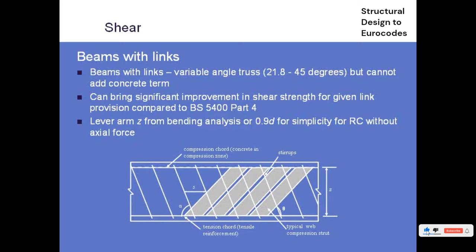Without any links, that's the situation. If we have links, then we have the same sort of truss model that was hidden behind BS5400. Whereas BS5400 had a truss model with inclined compression struts fixed at 45 degrees - it didn't tell you that in the code but that was the background - in the Eurocode we can vary the angle of those struts from 45 degrees down to a much flatter angle of 21.8 degrees. Flattening the truss angle means the concrete struts cross more links, involving more links in the shear resistance calculation, so we can get a lot more force out of the links.